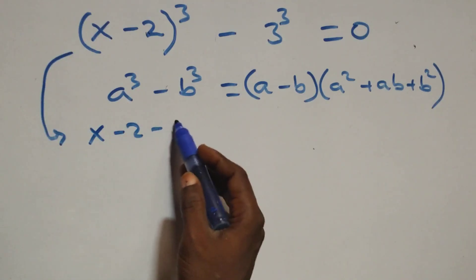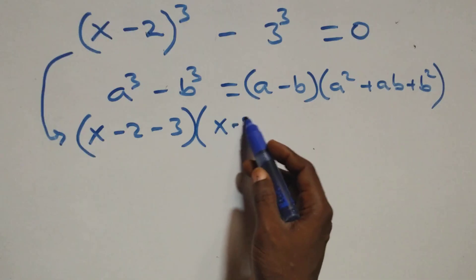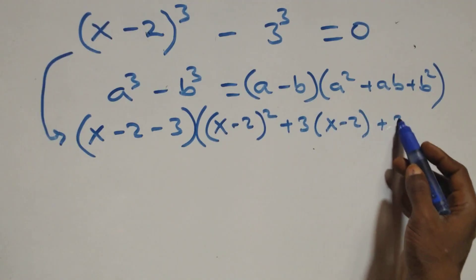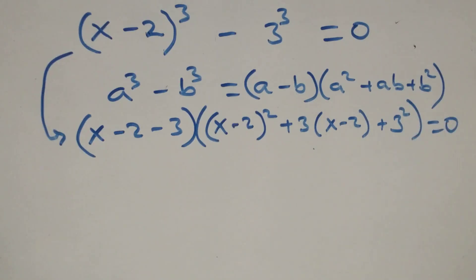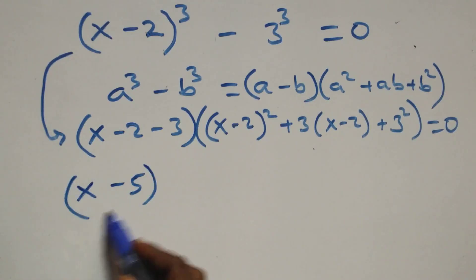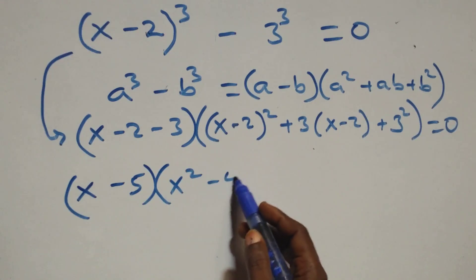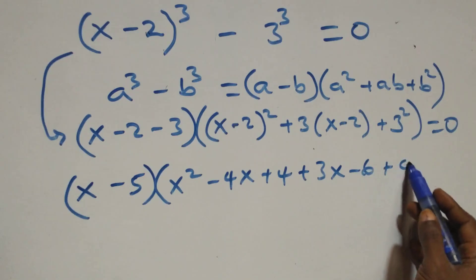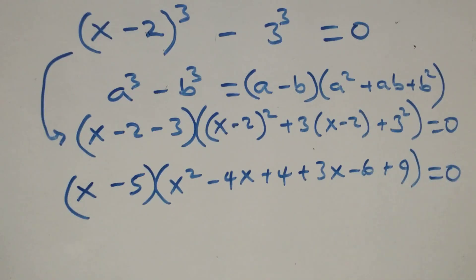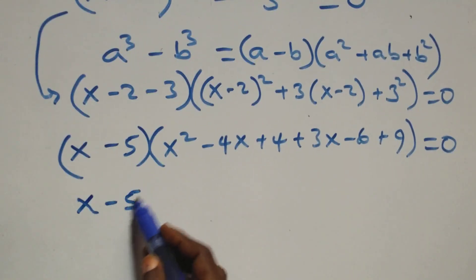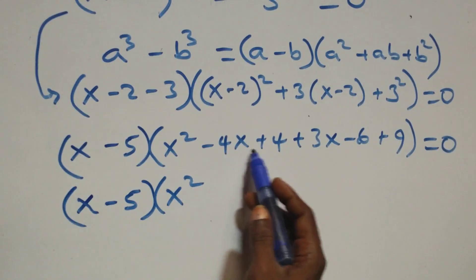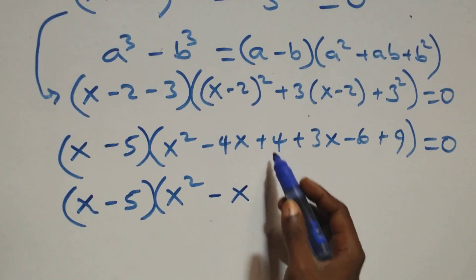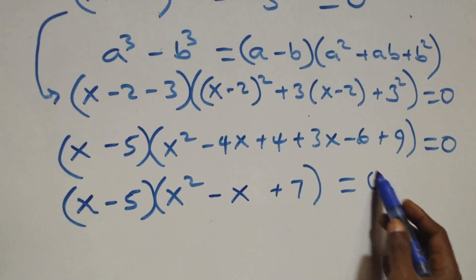Applying this, we get (x minus 2 minus 3) times the bracket: (x minus 2)² plus 3(x minus 2) plus 3², equals 0, giving (x minus 5) times the bracket. Expanding: x squared minus 4x plus 4, plus 3x minus 6, plus 9, equals 0. Inside we get x squared minus x plus 7.